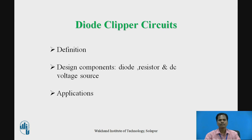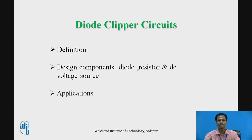Diode clipper circuits — a clipper circuit is an electronic circuit which clips off a certain part of an input AC voltage signal waveform above or below a certain reference level, without changing the remaining part of the waveform or its frequency. A diode clipper circuit can be designed using a diode as an electronic switch, a resistor as a current-limiting element, and a DC voltage source to set the desired DC reference level, that is the clipping level.